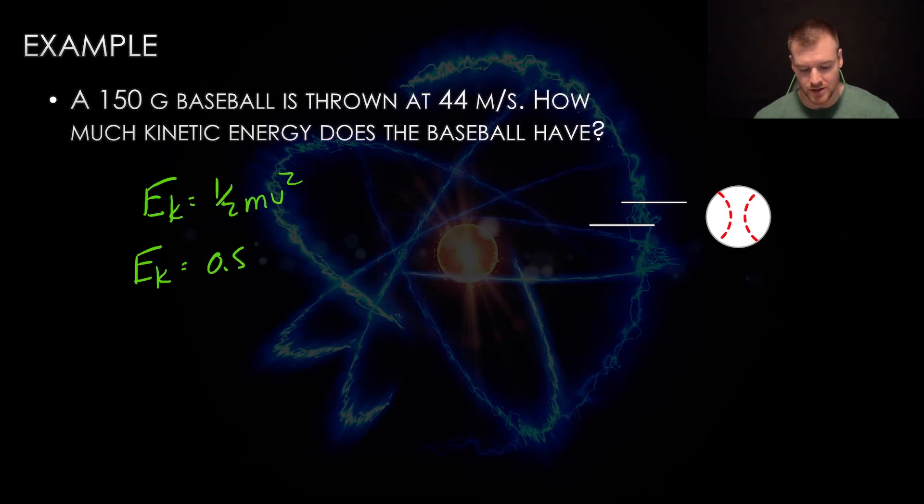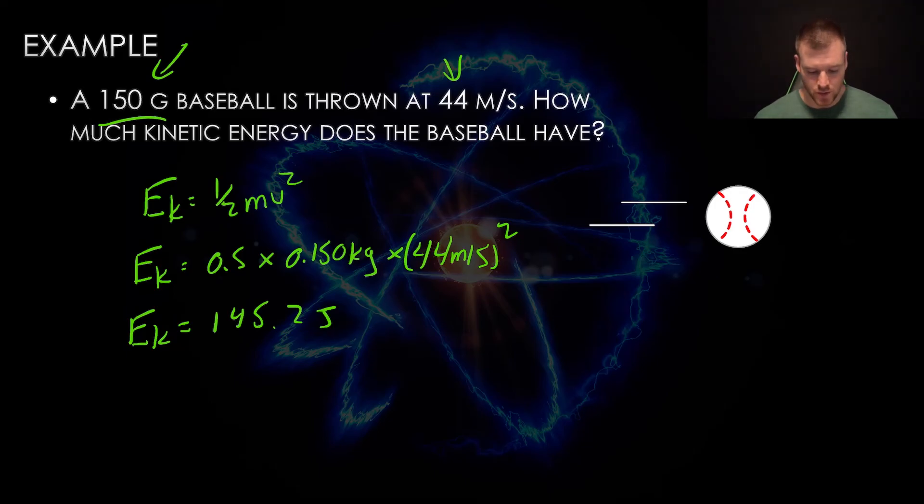EK equals half, so 0.5 times our mass. This is tricky because it said 150 grams and mass has to be in kilograms. There's 1000 grams in a kilogram, so 150 out of a thousand is 0.150 kilograms. Then the ball is thrown at 44 meters per second. Students often make the mistake of not squaring this number. That will affect your answer a lot. Put those all into the calculator and you should get 145.2 joules. Looking at significant digits, there was three in 150 but only two in 44, so we need to round to two. This is around 15 but bigger, so we use scientific notation: 1.5 times 10 to the two joules.